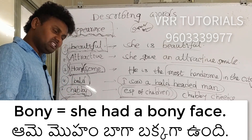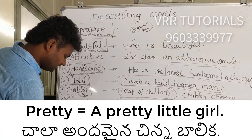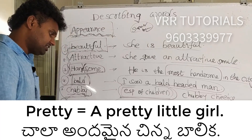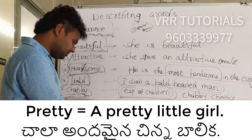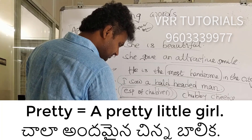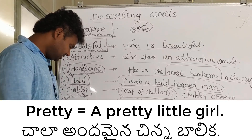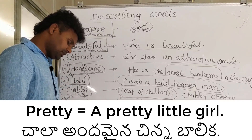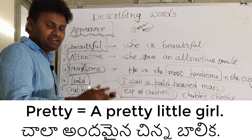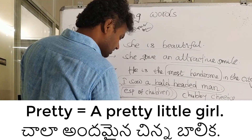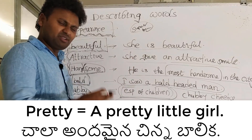The next word is 'pretty'. Pretty means attractive. We especially use it for a woman or a child. For example: 'A pretty little girl' or 'She's a pretty little girl.' We generally use 'pretty' for women and children, not so much for men.